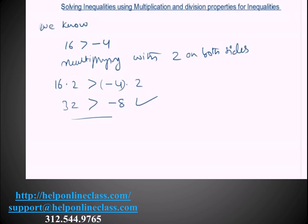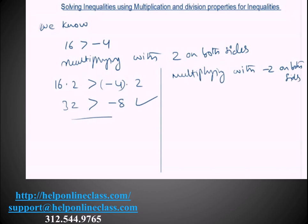Now let us multiply the same inequality with a negative number, for example negative 2. Let us draw a line between them. Multiplying with negative 2 on both sides gives you 16 times negative 2 greater than negative 4 times negative 2. This gives you negative 32 greater than positive 8. As we can see, negative 32 is greater than negative 8, which is not true.